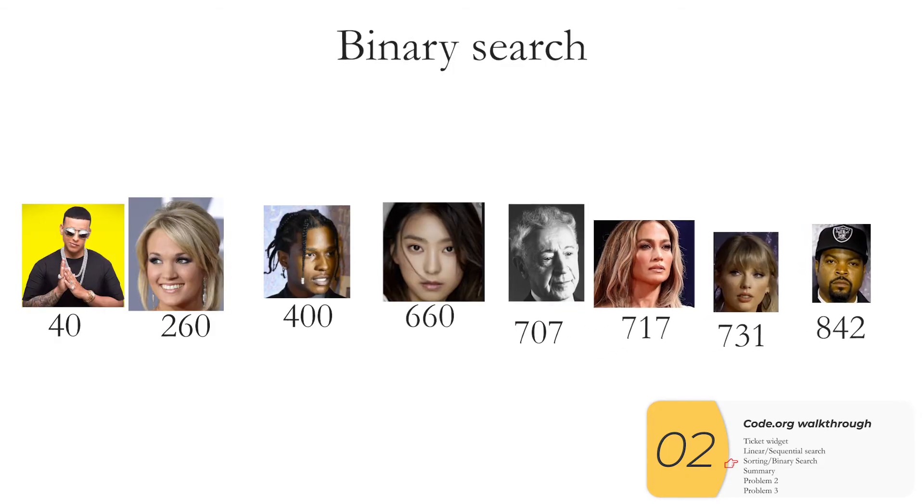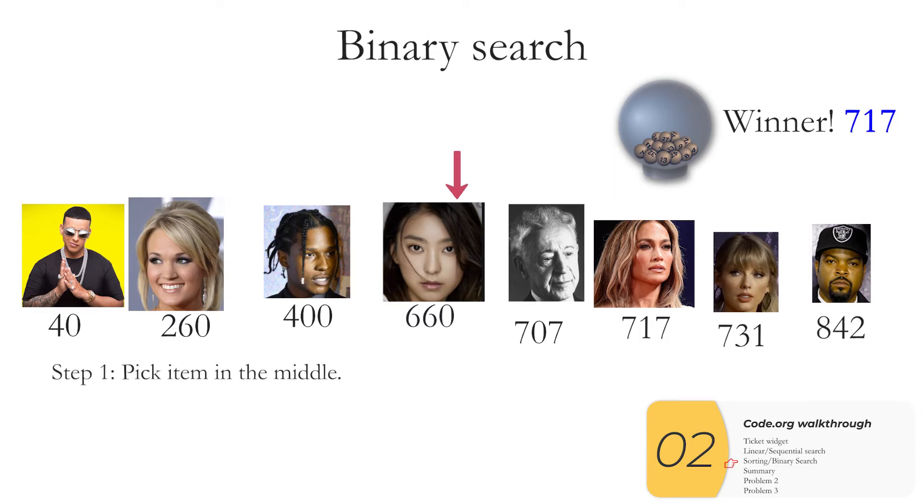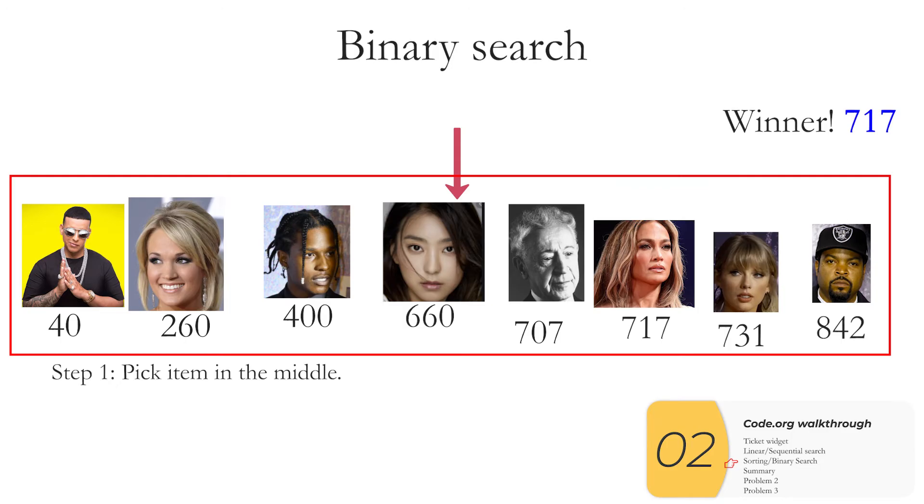So now we're going to introduce the concept of binary searching. So here's my people once again this time all sorted by numbers. If I pick a winner out of my ball and that winner is 717 instead of doing it with a linear search as before I'm going to use binary search. And the way the binary search works is this. First I pick an item in the middle. In this case I have eight items so there's not exactly one thing in the middle but truthfully it doesn't matter all that much. So here that's going to be 660. Then I'll ask myself is the item I'm looking for higher or lower than this. 717 is higher than 660.